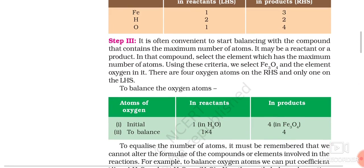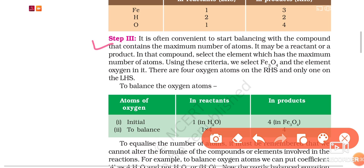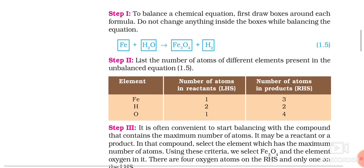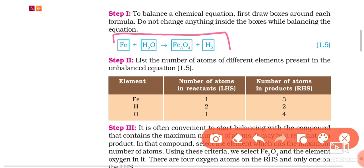In step 3, the most important step: we select the compound which contains the maximum number of elements and maximum number of atoms. Based on this criteria, we select Fe3O4, which contains the maximum number of atoms. Within this compound, we select the element with the maximum number of atoms — we select oxygen because the number of oxygen atoms is 4, which is more than the number of iron atoms, which is 3. So here we start the balancing of the chemical equation.